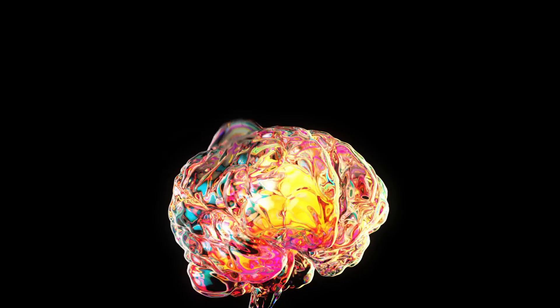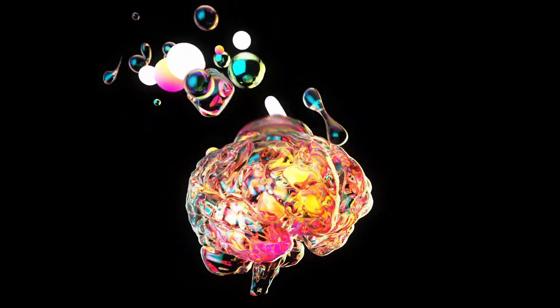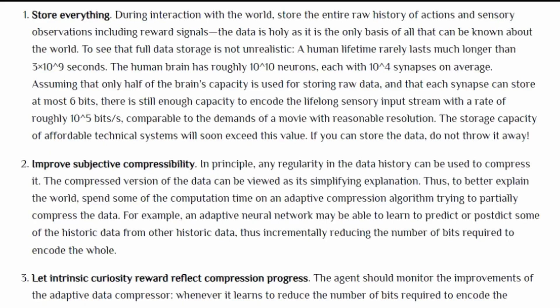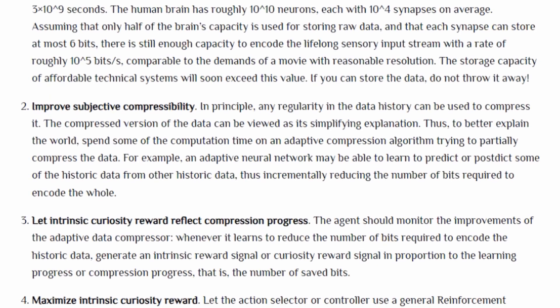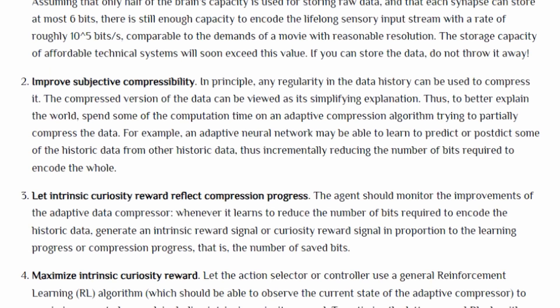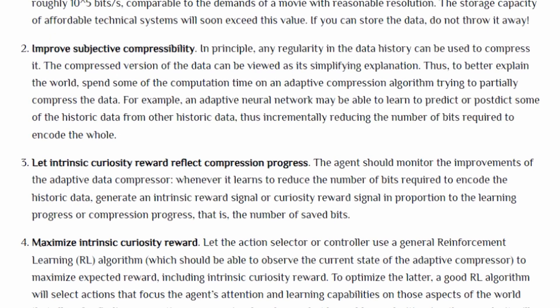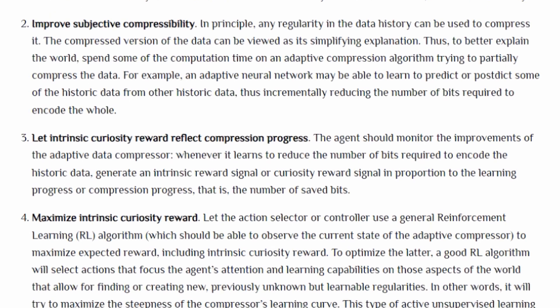There are a ton of compression algorithms out there. But in the human case, our data stream is not a sequence of letters, but the whole of our experience — our thoughts, feelings, and sensations. Our encoding, decoding, and compression scheme is still not fully known. The algorithmic framework is given in section 1.2: Schmidhuber defines four steps to this algorithmic process. Step one: store everything. Step two: improve subjective compressibility. Step three: let intrinsic curiosity reward reflect compression progress. Step four: maximize intrinsic curiosity reward.